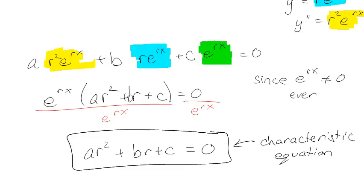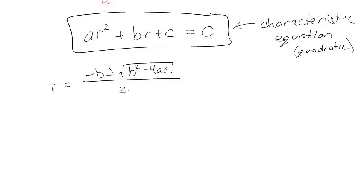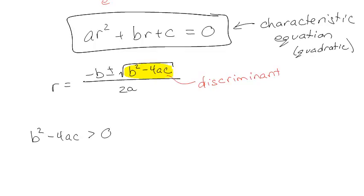You should recognize this as a quadratic equation, so I can use the quadratic formula: r = (−b ± √(b²−4ac)) / 2a. Remember from college algebra that the part underneath — b² − 4ac — is called the discriminant. Depending on whether that discriminant is positive, negative, or zero, you end up with different kinds of answers. Since this is a second-degree polynomial, I should have two answers, and there are three options for what those answers look like.